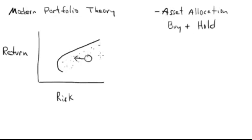When advisors are designing a portfolio, if a person is younger and can take more risk, they'll try to create a portfolio up here on the frontier. If someone is retired and wants to be conservative, they'll create a portfolio down here. The whole point is to get as close to this efficient frontier line as possible.